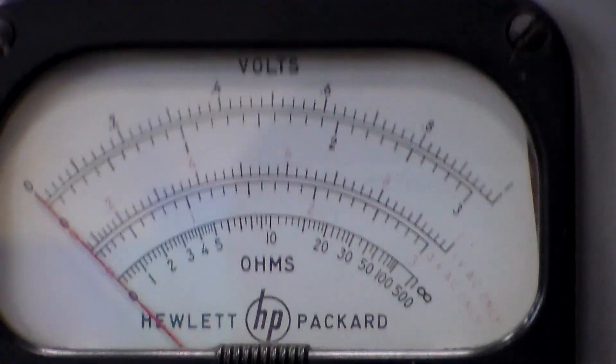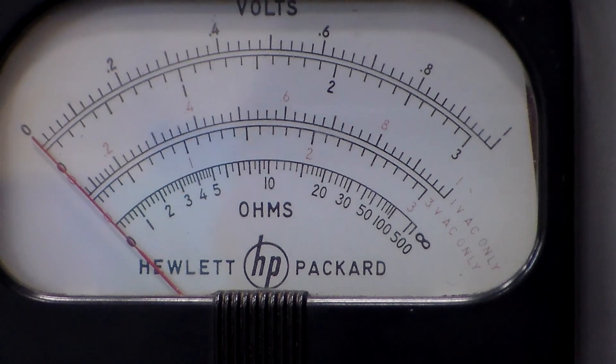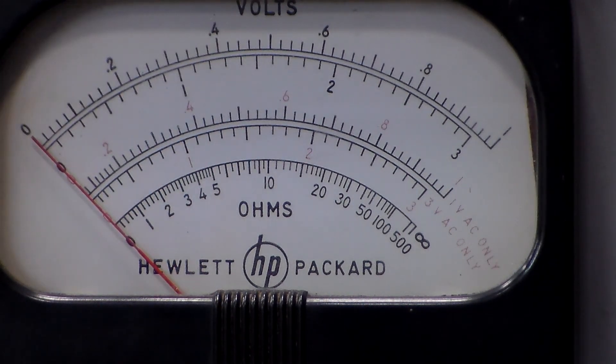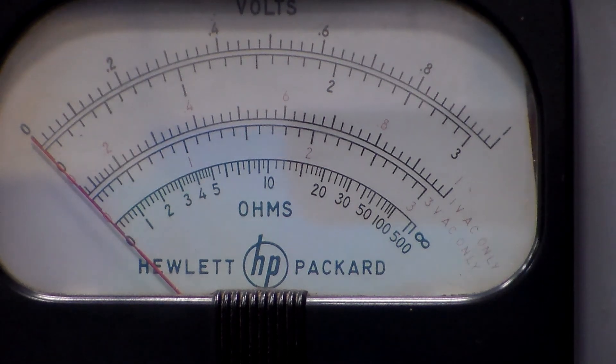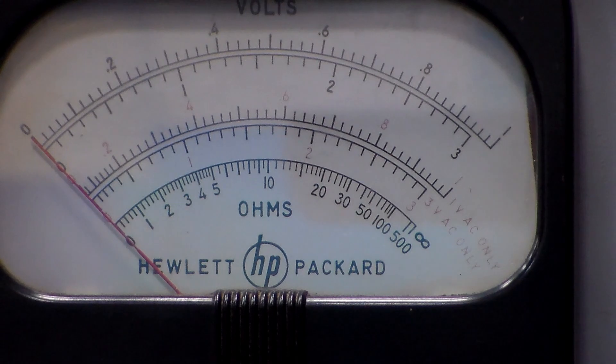It's quite a range that that decade box has and we can verify the performance of the 410B. First up, I'll just zoom in and adjust the camera so we can see the meter. At the moment I actually have it zeroed and we're just about ready to start doing the calibration procedure for the ohms range.